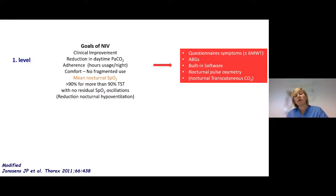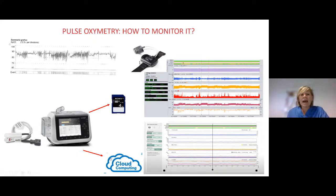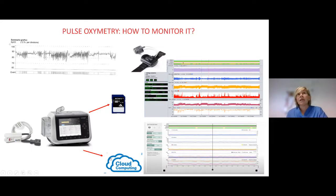The next step is nocturnal oxygen saturation, which is a very important aim to monitor in home non-invasive ventilation. I can do this using a saturimeter able to record for more than eight hours, or now using a pulse oximeter that is plug-and-play with the ventilator. In this way, after downloading ventilator data, you have every-night recording from the pulse oximeter.